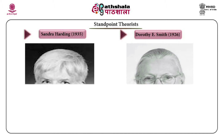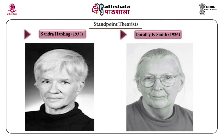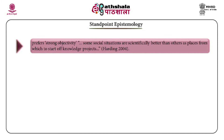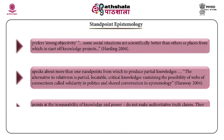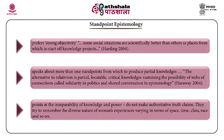Two renowned standpoint feminists are Sandra Harding and Dorothy Smith. Standpoint epistemology prefers strong objectivity and holds that some social situations are scientifically better than others as places from which to start knowledge projects. It speaks about more than one standpoint from which to produce partial knowledges. The alternative to relativism is partial, locatable, critical knowledge sustaining the possibility of webs of connection — solidarity in politics and shared conversation in epistemology. It points to the inseparability of knowledge and power, does not make authoritative truth claims, and tries to remember the diverse nature of women's experiences varying in terms of space, time, class, race and so on.